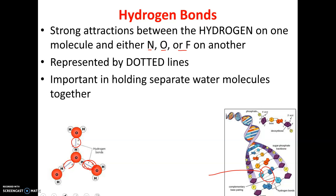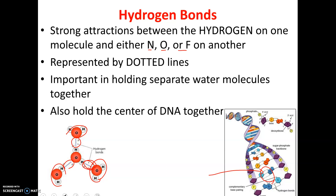Hydrogen bonds are what hold water molecules together in liquid. When you think about individual water molecules, why don't they all float away? Why is water liquid? It's these hydrogen bonds — temporary attractions that are weaker than real bonds, being made and broken all the time. That's why water is liquid: the water molecules are making these bonds, breaking them, sliding past each other, and making new ones.